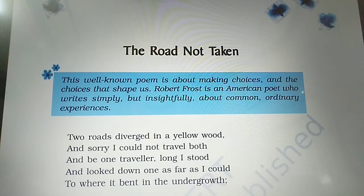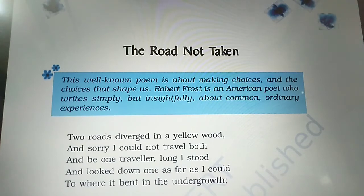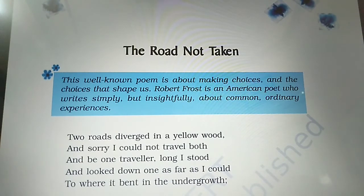So students, this poem is called 'Road Not Taken.' The title suggests that the poet is talking about the road which he did not choose. He had two options — he was going on his way, and in a forest he had the option of two roads. He is talking about the road he did not opt for.